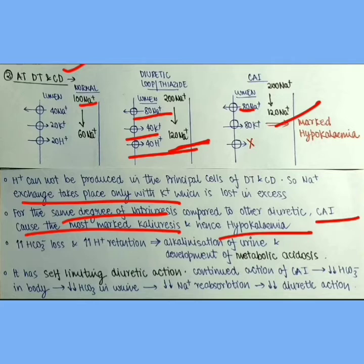Also we have seen there is increased bicarbonate loss in the urine and increased H+ retention. These two lead to alkalinization of urine and development of metabolic acidosis.